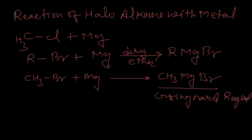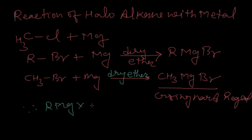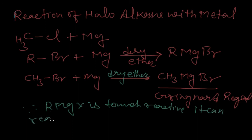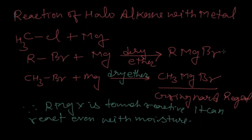The reaction takes place in dry ether. Why dry ether? Because Grignard reagent (R-MgX) is too much reactive — it can react even with moisture, and it will change back into haloalkane. This is a very important point about Grignard reagent.